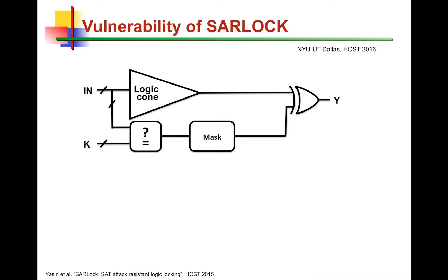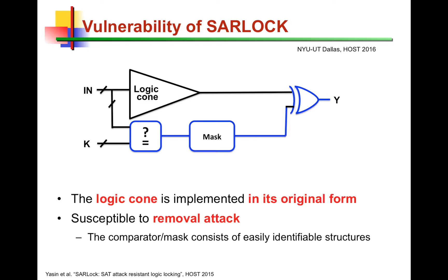However, SARLOC has a structural vulnerability. When this netlist is reverse engineered, it is easy to identify the XOR driving the output, the mask unit, and the comparator structures. The real problem is that the logic cone we want to protect is implemented as-is. Once these surrounding units are identified, an attacker will recognize the SARLOC blocks, remove them, and recover the logic cone we want to protect. So SARLOC is vulnerable to the removal attack — a reverse engineer can simply remove these blocks and the remaining logic is the protected logic cone.